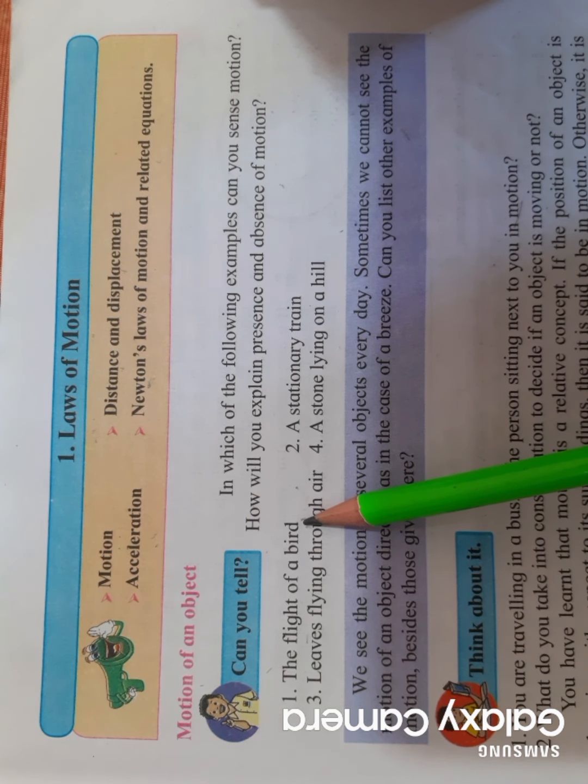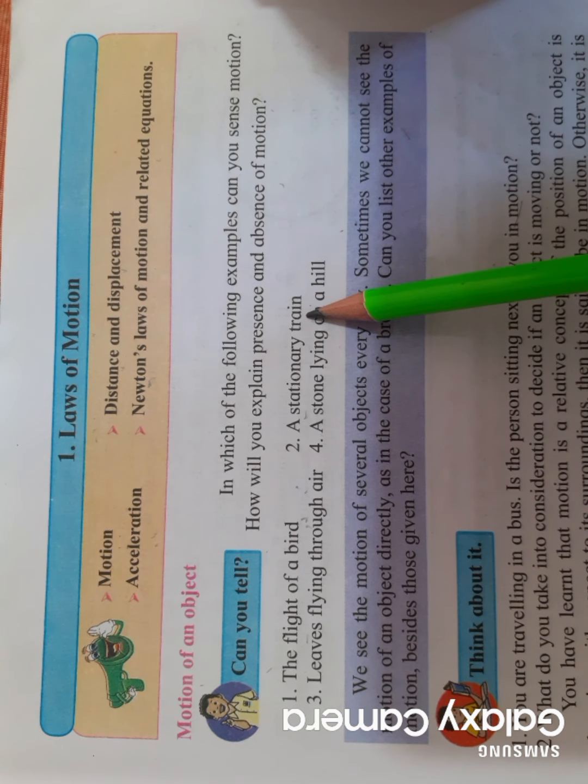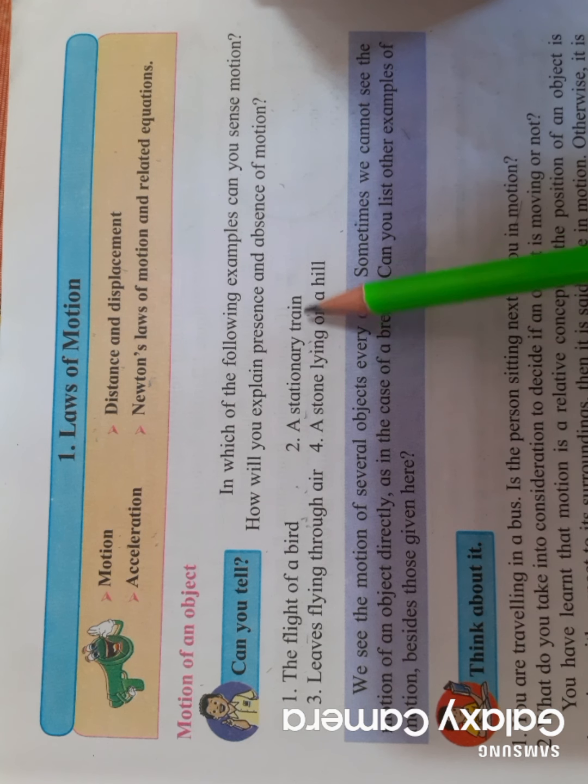Second example: a stationary train. A train is halted or stopped at a particular station. Is there any motion? No, there is no motion because the train is at that particular position only. The train is not moving at all.